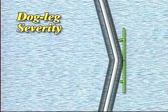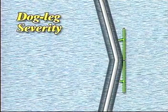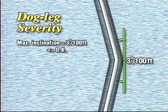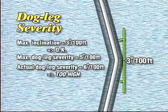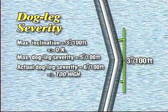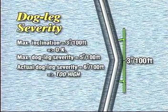Note that it's possible to run into problems even when the departure from vertical is within an acceptable range. Here, even though the inclination is within its assigned limit of 3 degrees per 100 feet, the dog leg severity is too high. This illustrates the importance of measuring both inclination and direction even on vertical wells.